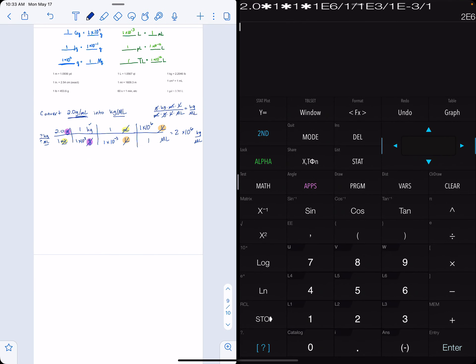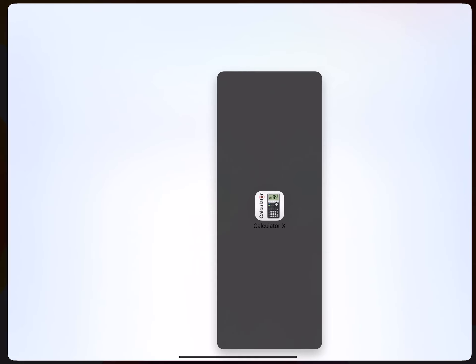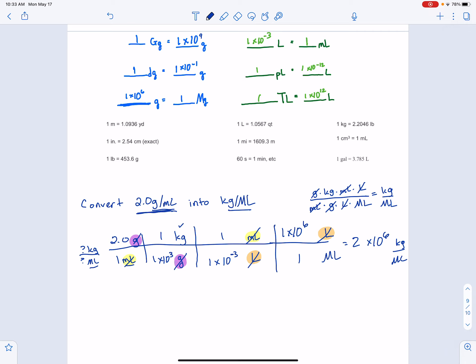And let's check our sig figs. So our sig figs right here, this is exact, because that's on the metric chart, that's exact, that's on the metric chart. And this is exact, this is on the metric chart. So this is all on the metric chart. So I've got one, two sig figs, so I need this to have two sig figs. And there I go.